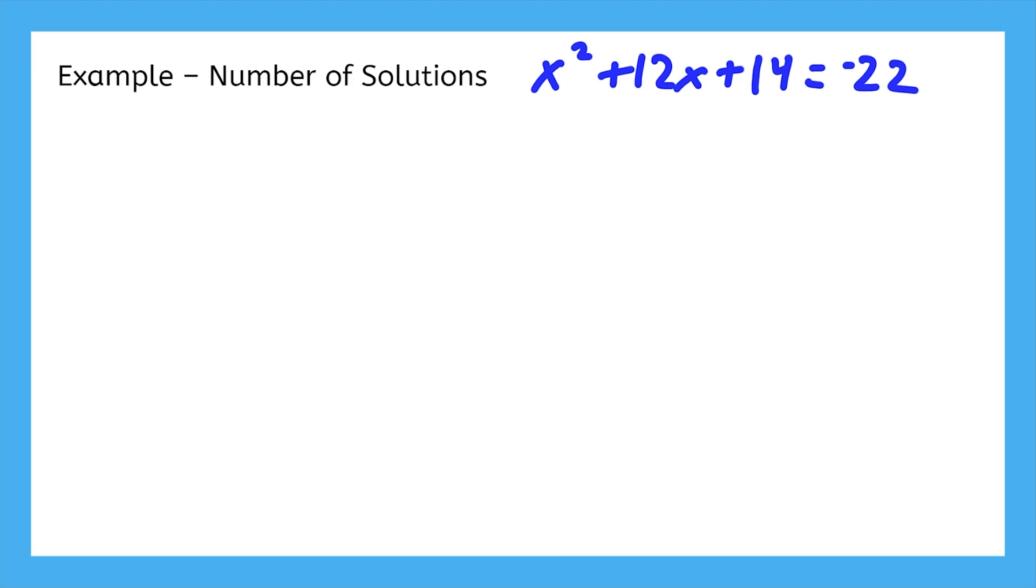First, let's look at some examples with different numbers of solutions. We start off like normal by moving all constants to the right side. Half of 12 is 6, and the square of that is 36, so we add 36 on both sides.